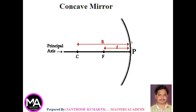This is a concave mirror, also known as a converging mirror. P represents the pole of the mirror. C is the center of curvature. F is the principal focus. This is the line known as principal axis. The distance of point C from P is known as R, where R is the radius of curvature. The distance of point F from P is known as the focal length.